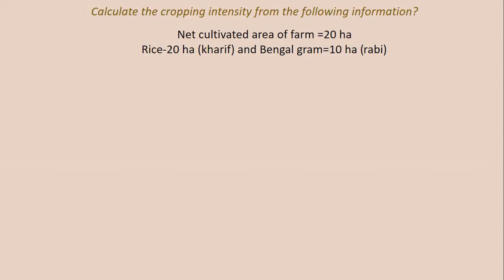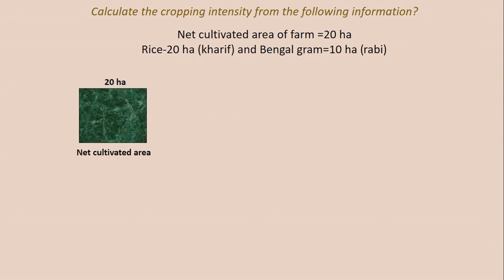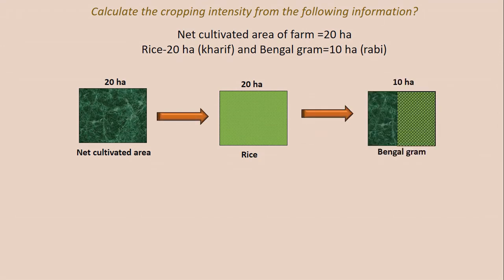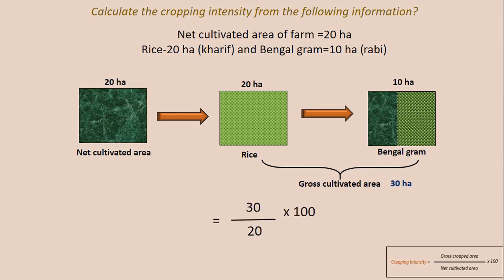Problem 5: The net cultivated area is 20 hectares. In kharif, rice was cultivated in 20 hectares, and in rabi, Bengal gram was cultivated in 10 hectares. So the gross cultivated area is 20 + 10 = 30 hectares. Using the formula: 30 ÷ 20 × 100 = 150% is the cropping intensity.